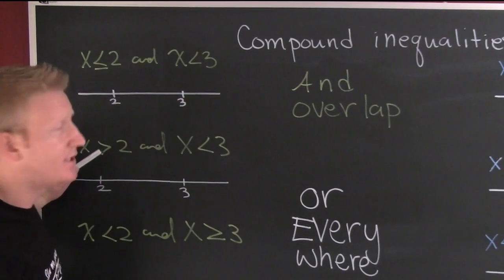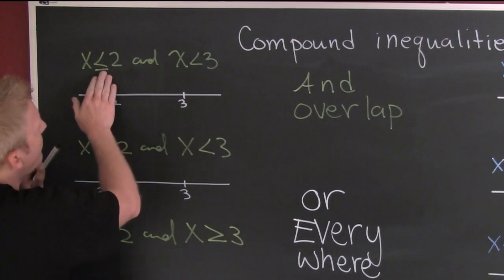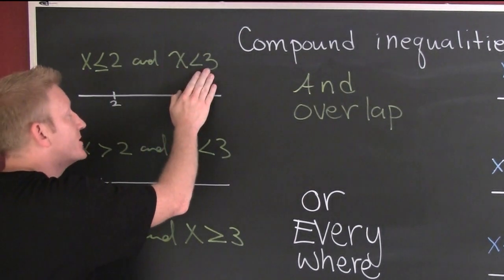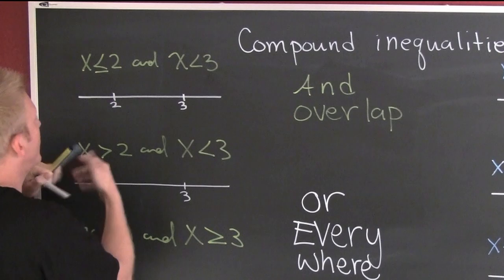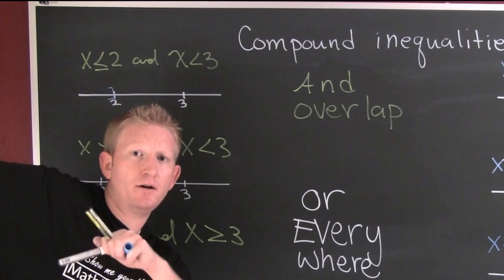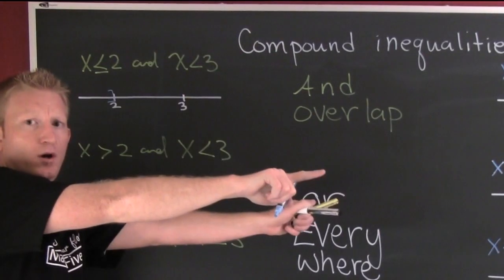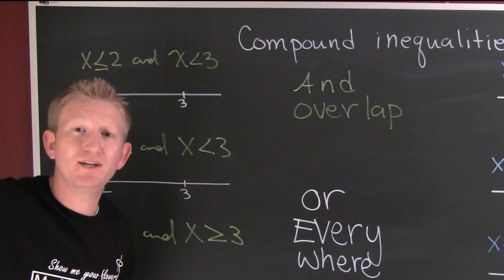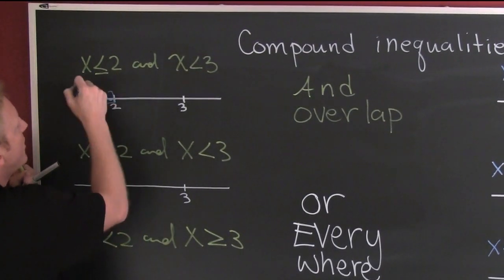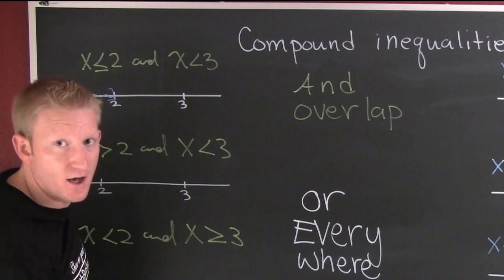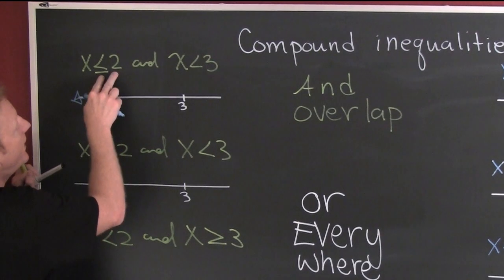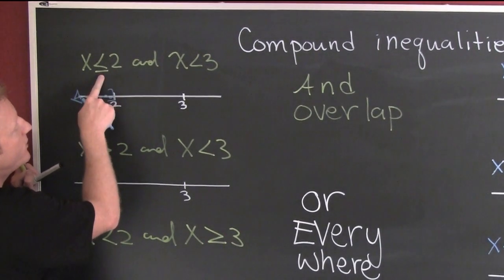Let's do the AND case first. Here I have x is less than or equal to two, and x is less than or equal to three. On the two, which way are you going to shade — to the window or to the wall? I'm gonna shade the way the arrow goes, as long as x is on the left. And this is closed because of the 'or equal to.'